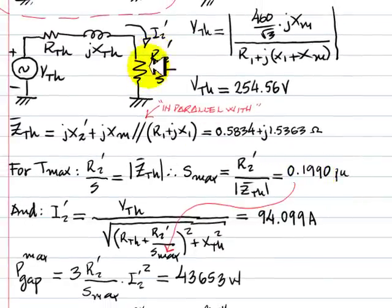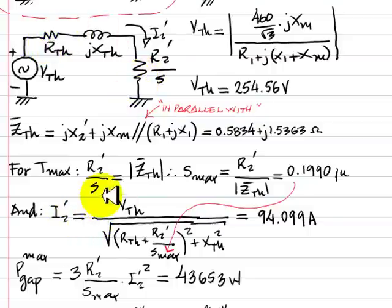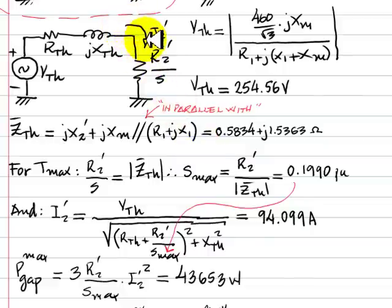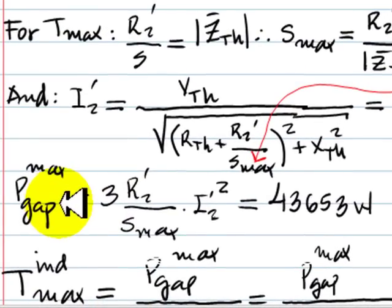To find the maximum torque, we compute the gap power — the power in this resistor — then multiply by 3. We compute this current as VTh divided by the total impedance magnitude: the Thevenin impedance in series with R2' over Smax. Taking the absolute value — squaring the real part, squaring the imaginary part, taking the square root — that current is 94.1 A. We square that current, multiply by this resistance at S equal to Smax, multiply the whole thing by 3, and we have the gap power for maximum torque: 43.7 kW.